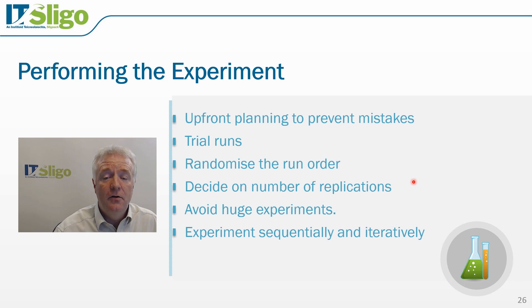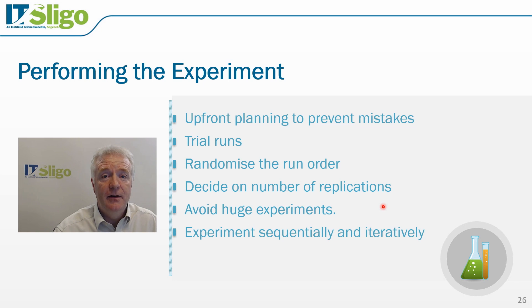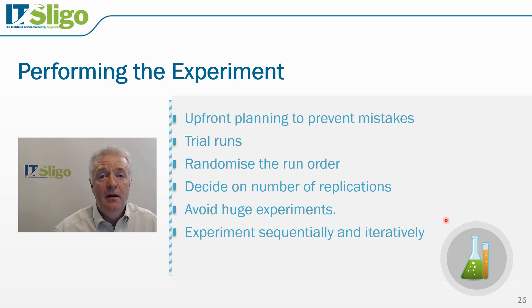We also need to decide on the number of replications — the number of times we are going to evaluate each treatment combination. We would like to avoid huge experiments, because the number of experiments conducted is particularly large and there is always the danger of mistakes, such as setting factors and factor levels incorrectly, resulting in a response that is inconsistent with the rest of the data. We would also like to experiment sequentially and iteratively — it's much better to perform smaller experiments which build on information gained in a previous experiment, and use this information to plan the next experiment.